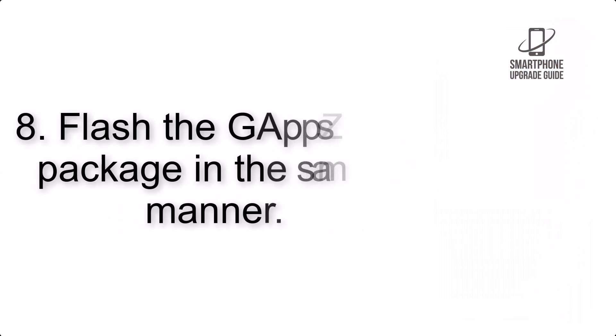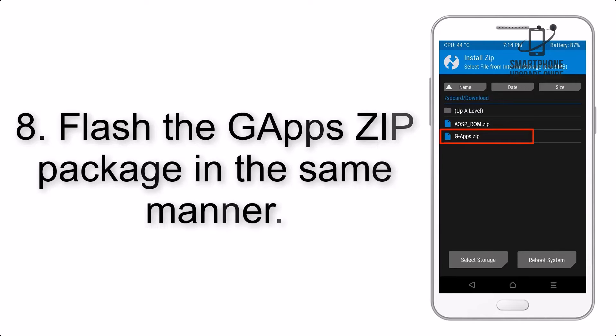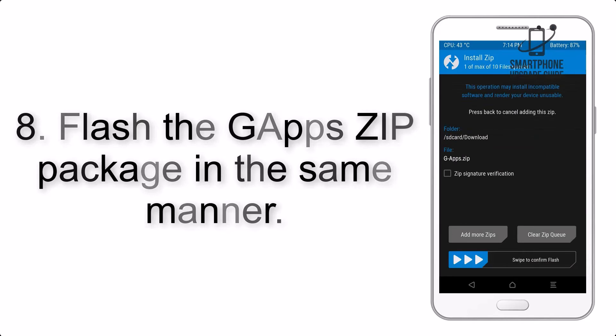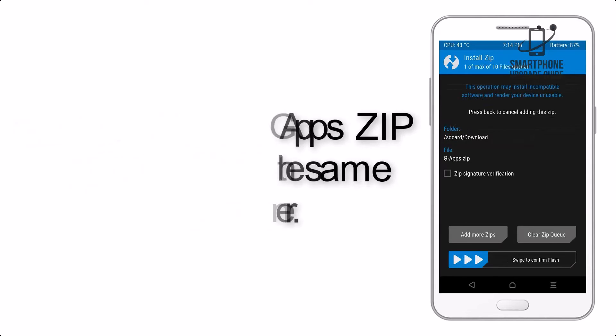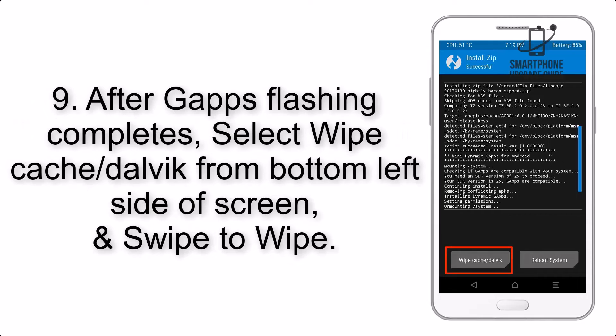Step 7: Swipe the button on the screen to install the ROM file. Step 8: Flash the GApps zip package in the same manner.